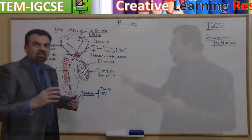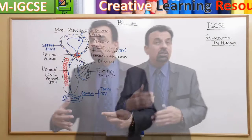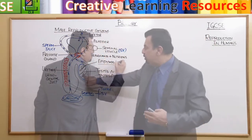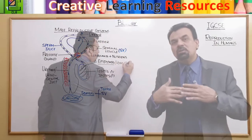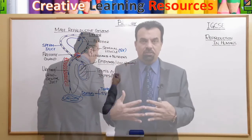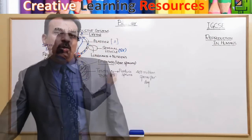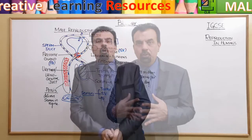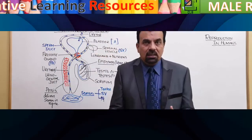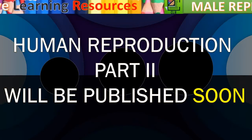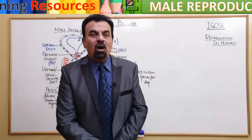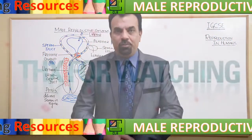So to summarize: the epididymis is for the storage of sperm, while the testis is for the production of sperm. I hope this has been a very helpful video. The next part of this section will be in the next video. Thank you very much for coming to Creative Learning Resources — all the best, take care, and have a wonderful day ahead.